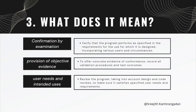Let me explain the FDA definition we saw a couple of slides back. The first phrase was 'confirmation by examination,' which means verify that the program performs as specified in the requirements for the use for which it is designed, incorporating various uses and circumstances — basically, we need to show by examination that whatever requirements we defined for a system, we can confirm them. The second phrase was 'provision of objective evidence,' which means affirming concrete evidence of conformance and recording all validation procedures and test outcomes. This is one of the core principles of CSV: to document all objective evidence properly.